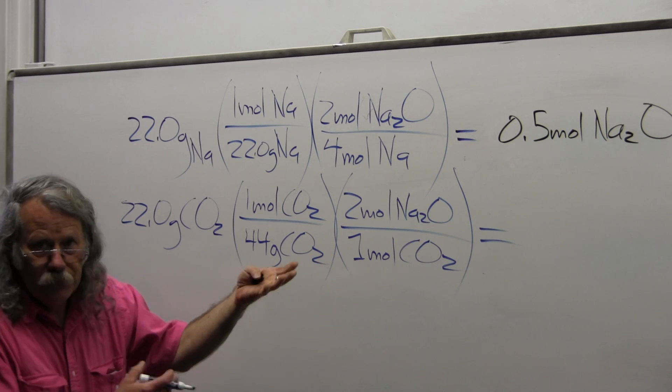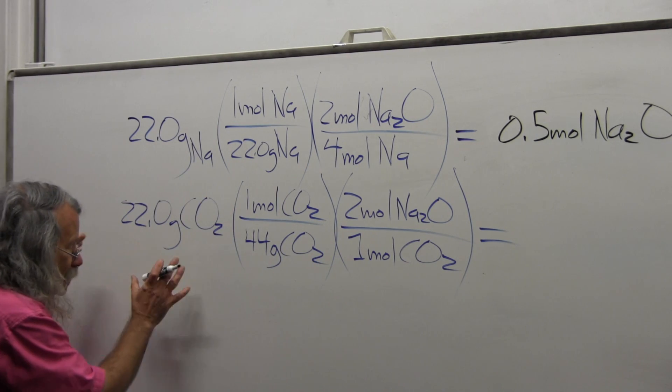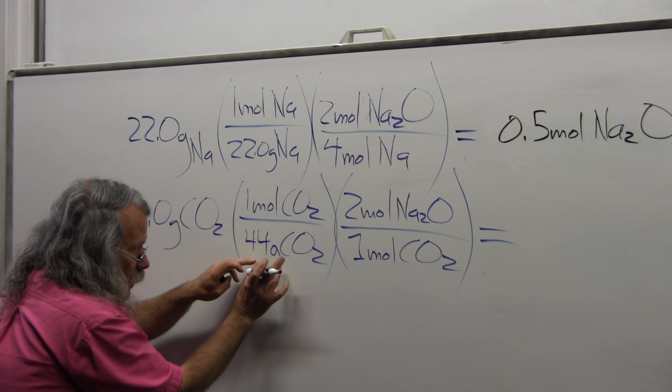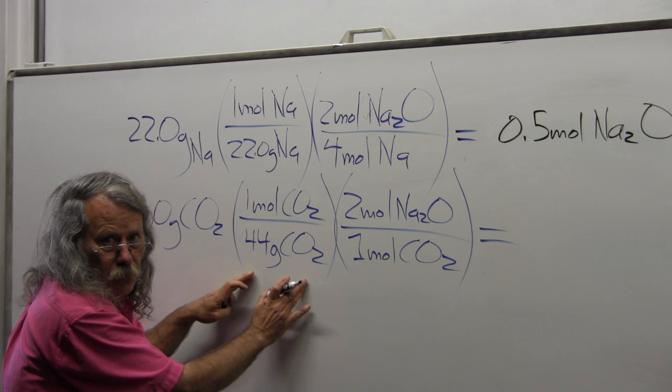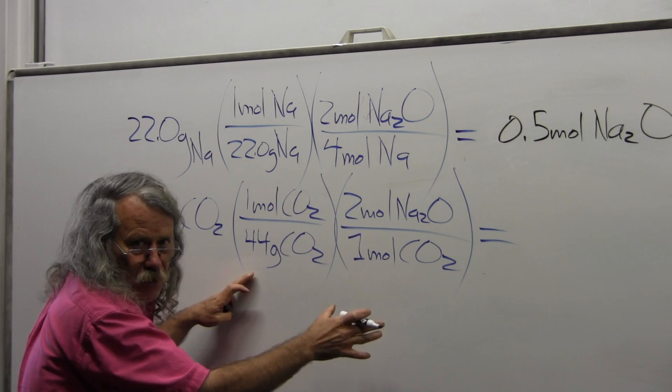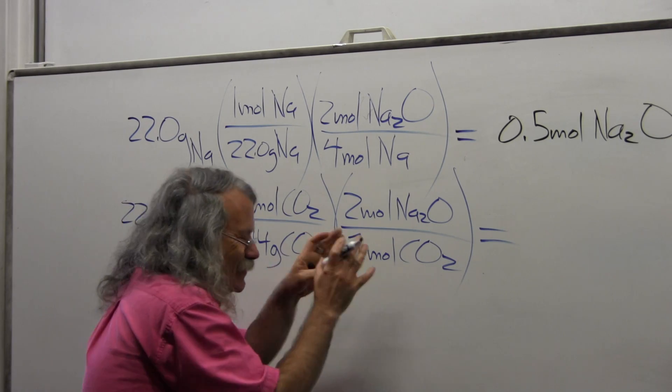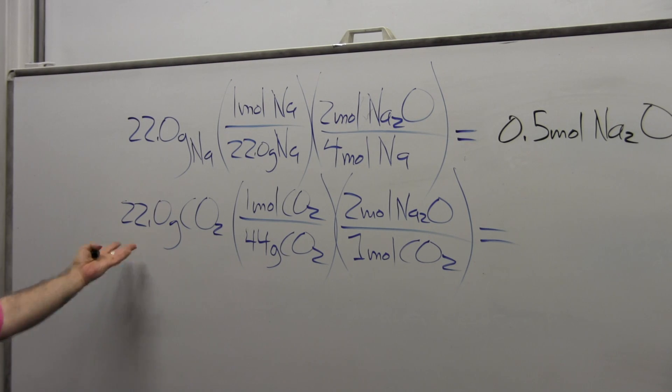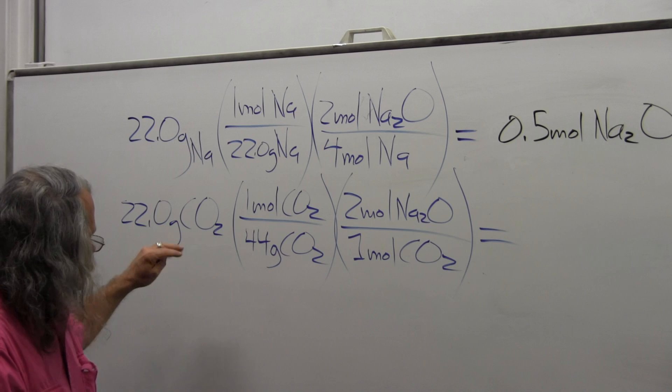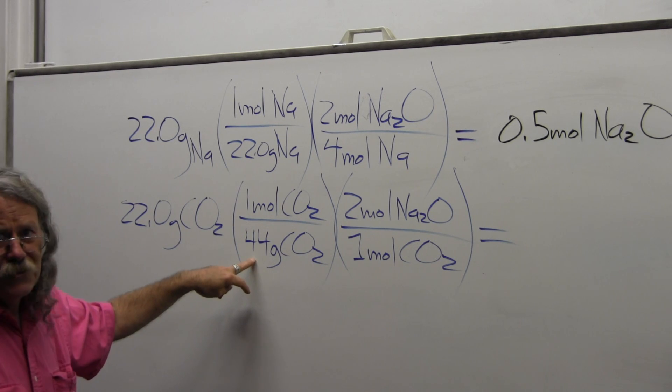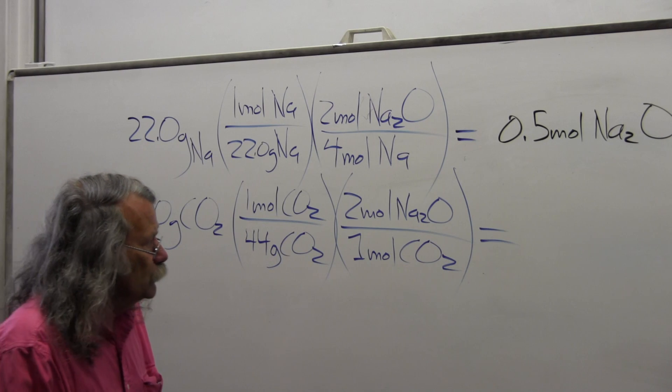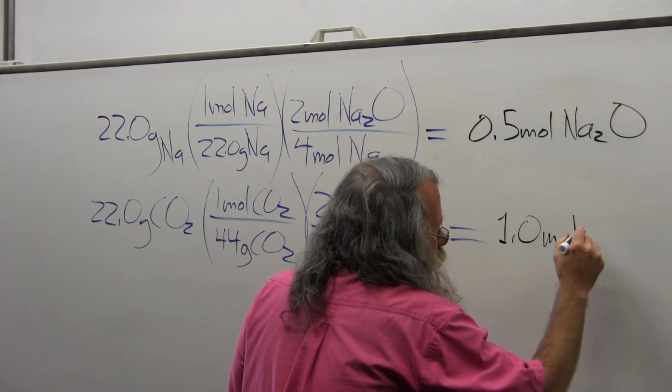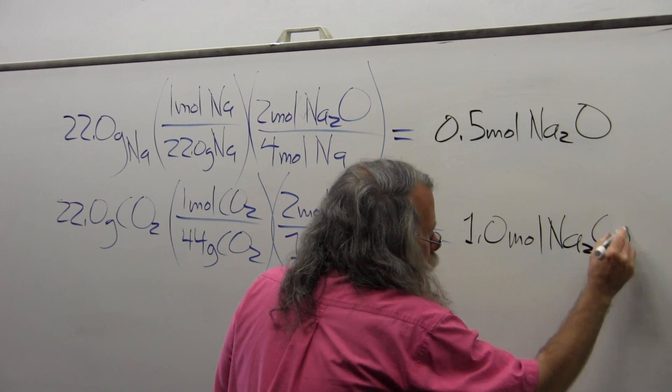With all the terms and units explicitly included, you don't take shortcuts, you include every unit, everything is clear. I can follow the logic. I start in grams and end up in moles of product. This time, 22 divided by 44 is one half. One half times 2 is 1, so it's 1.0 moles of sodium oxide.